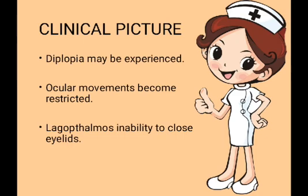Lagophthalmos is the inability to close the eyelids — the eyelids do not get properly closed. This problem is known as lagophthalmos. So these three things — diplopia, restricted ocular movements, and lagophthalmos — are experienced in symblepharon.